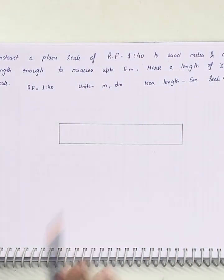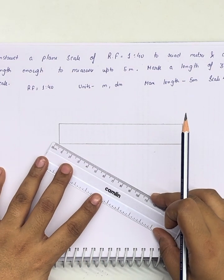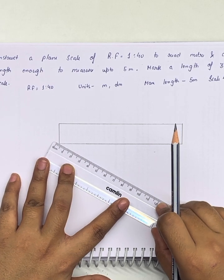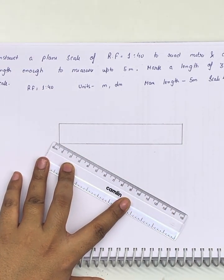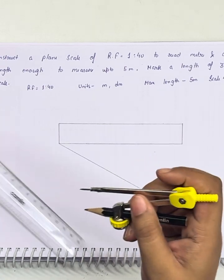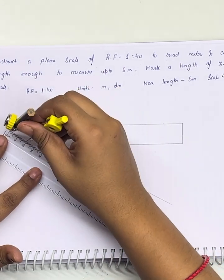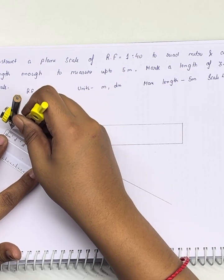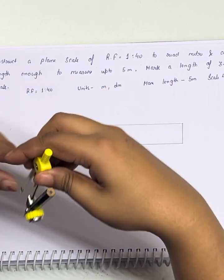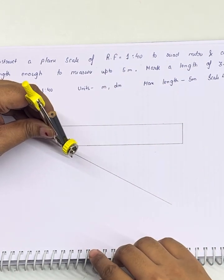Now we need to divide this line in 5 equal parts. So we will be dividing this line in 5 equal parts. Let's draw any length of line, opening our compass to let's say 2 centimeters or something, or any length.